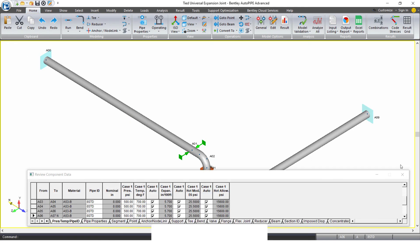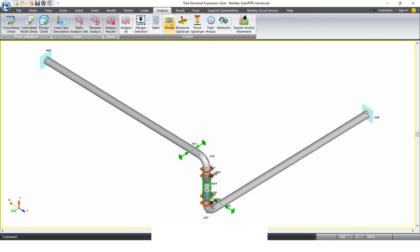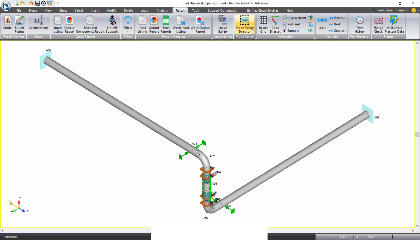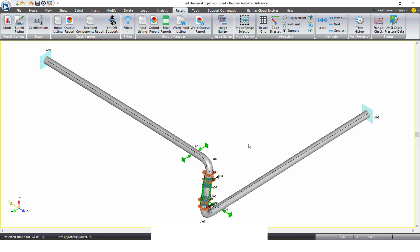Here is the tied universal joint model and if I run a quick analysis and take a look at my displacements, you can see that the joint is moving in all directions. You can get a general feel that axially it looks like it's expanding a bit. They're not moving the same amount down.